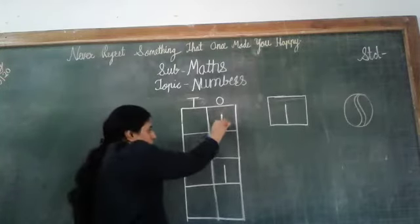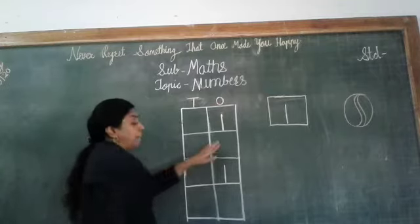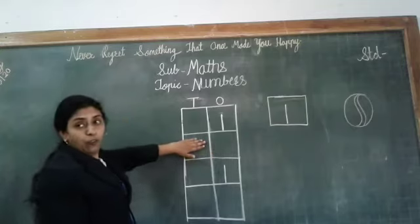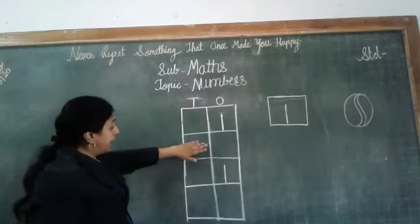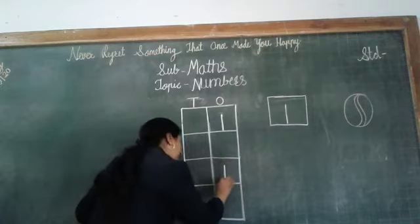This is number 1. After that you have to leave one square and write in the next square number 1. This is number 1.